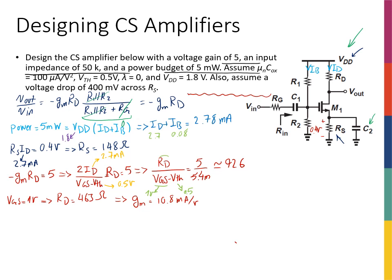Using ID = ½ · μn·Cox · (W/L) · (VGS − Vth)², with ID = 2.7 mA, VGS − Vth = 0.5 V, and the known process parameters μn·Cox, we can solve for W/L. The result is W/L ≈ 260 (dimensionless, since width and length are both in meters and cancel out).